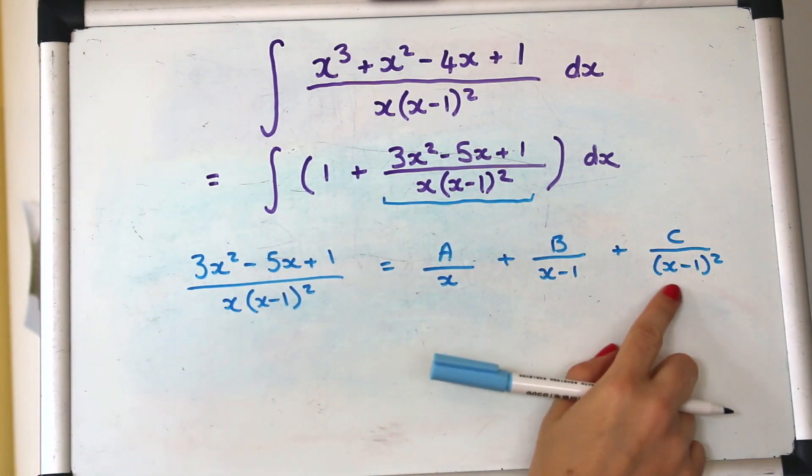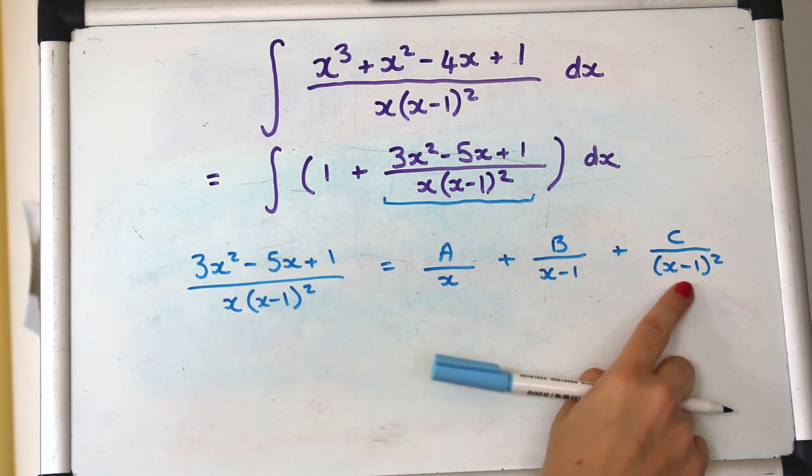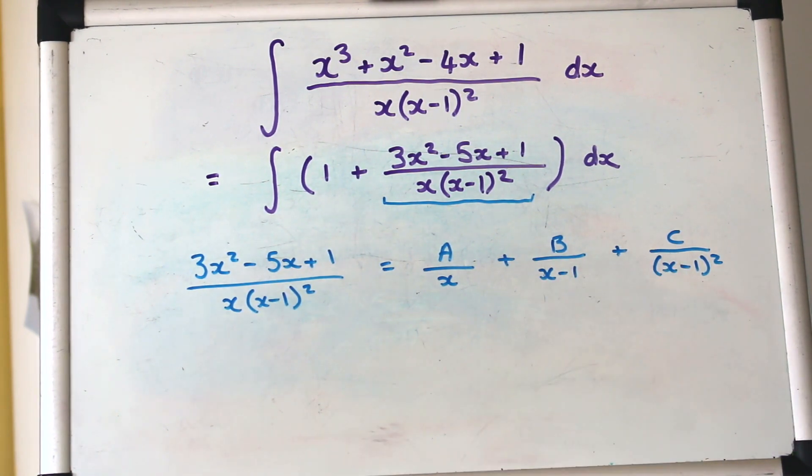Okay so we're now just going to take this bit here and split it into partial fractions. And just be aware this is another one where you've got that factor repeated kind of one with a squared one not so let's try that now.